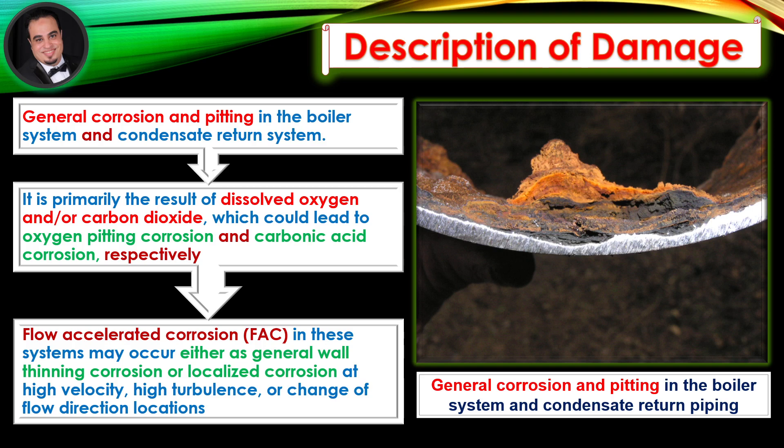Flow accelerated corrosion in these systems may occur either as general wall thinning corrosion or localized corrosion, at high velocity, high turbulence, or change of flow direction locations.